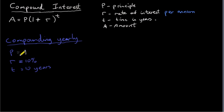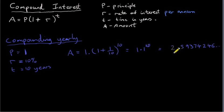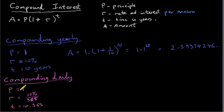Let's suppose we have a principal of 1 — one euro, one dollar, one whatever — just to illustrate how the number e arises in compound interest. Our rate of interest is 10% per year and our time of investment is 10 years. So our amount is 1 times (1 + 1/10) raised to the power of 10, which gives us 1.1 to the power of 10, equaling 2.59374246 and so on.